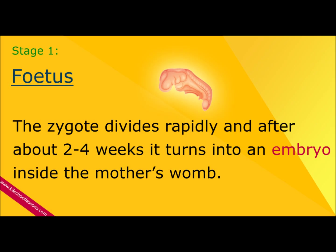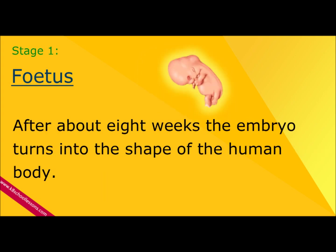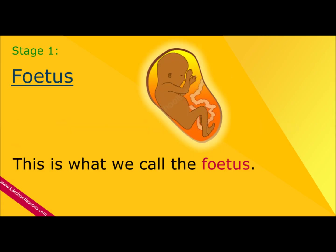The zygote divides rapidly, and after about 2 to 4 weeks, it turns into an embryo inside the mother's womb. After about 8 weeks, the embryo turns into the shape of a human body. This is what we call the fetus.